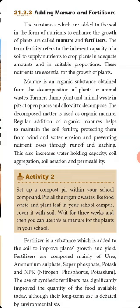Farmers dump plant and animal waste in pits or open places and allow it to decompose. The decomposed matter is used as organic matter. The regular addition of organic manure helps to maintain soil fertility, protecting it from wind and water erosion, and preventing nutrient losses through run-off and leaching.